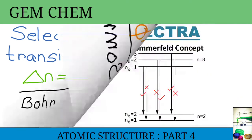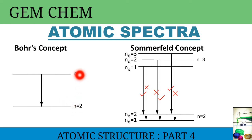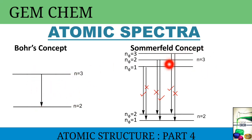Now let us see the atomic spectra for the Bohr concept. Suppose we take the first Balmer line — transition takes place from three to two. We observe this transition. But in case of the Sommerfeld concept, there are two quantum numbers, N and N-phi, so we get divided lines.